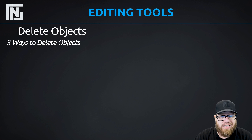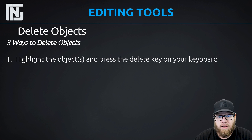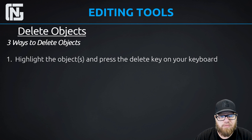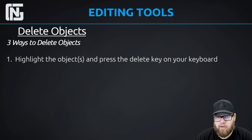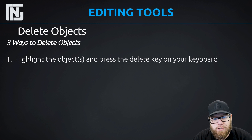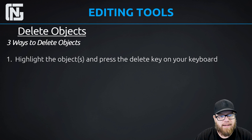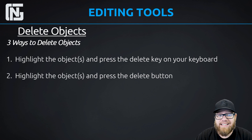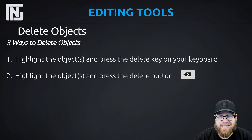There are three ways to delete an object in Packet Tracer. The first way: you can simply highlight the object or objects and press your delete key on your keyboard. You'll get a confirmation dialog box — the usual 'are you sure you want to delete this?' — just click OK. The second way would be to highlight the object or objects and press the delete button up in the menu bar. You'll also get the same confirmation dialog box.